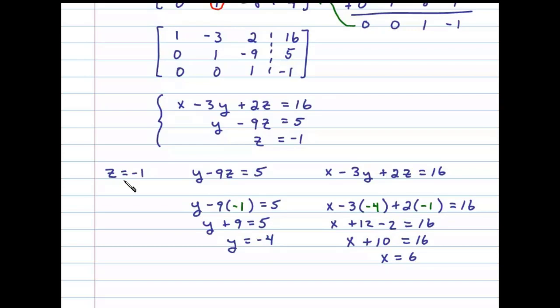Now once we have the values for x, y, and z, all that's left to do is to present our answer as an ordered triple. And we have 6, comma negative 4, comma negative 1. That's our solution.